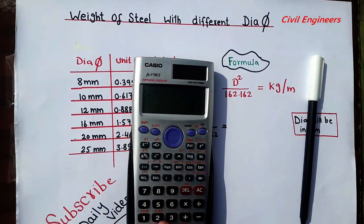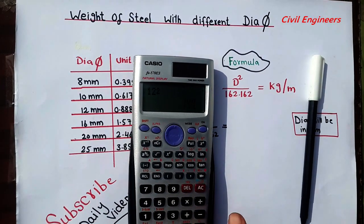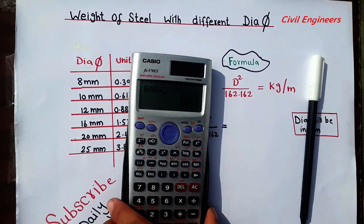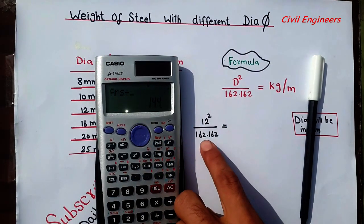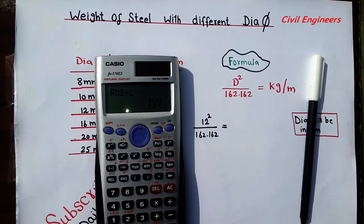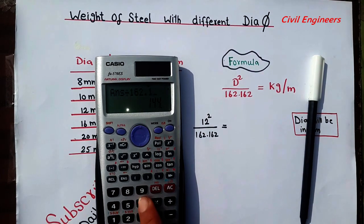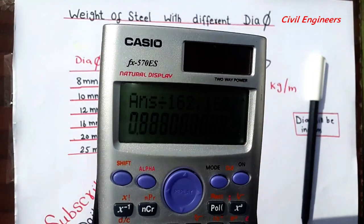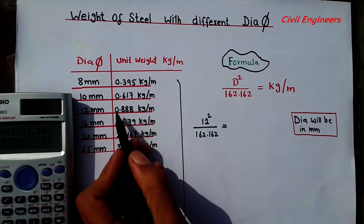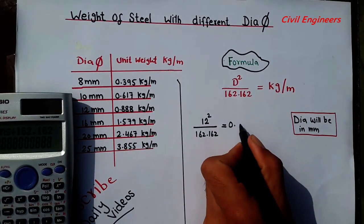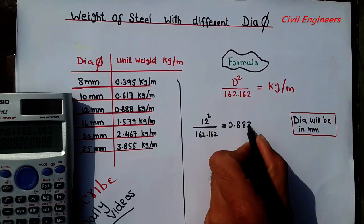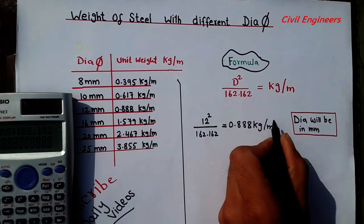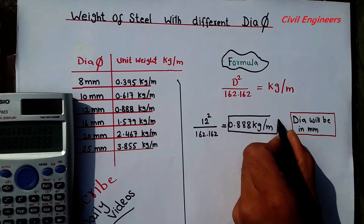So 12 square is equal 144, mean 144 divided by 162.162. Put here 162.162, it will give you the answer: 0.888. So this is 0.888 kg per meter. So this is the unit weight for the 12 millimeter.